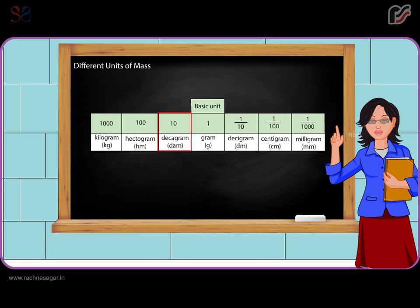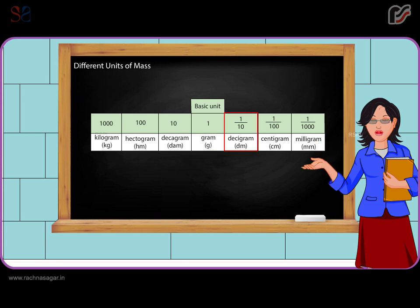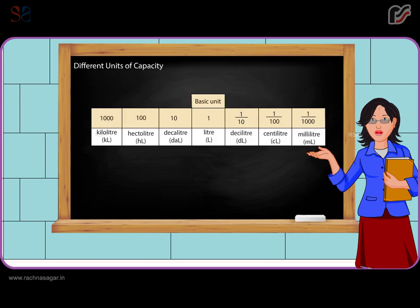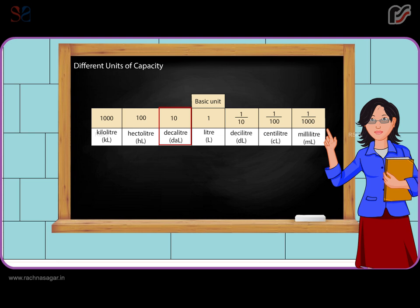Different units of mass: Kilogram, Hectogram, Decagram, Gram, Decigram, Centigram, and Milligram. Different units of capacity: Kiloliter, Hectoliter, Decaliter, Liter, Deciliter, Centiliter, and Milliliter.